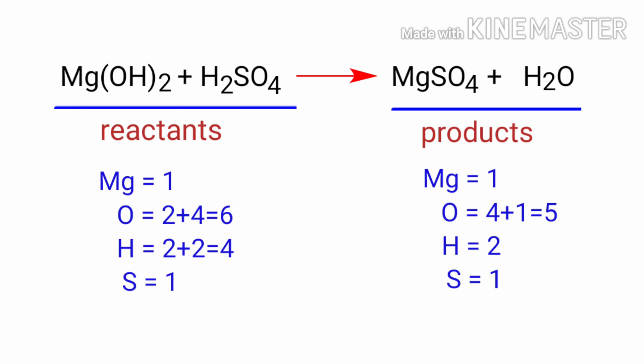The number of atoms are not balanced on both sides. To balance the chemical equation we need to make use of coefficients. A coefficient is a number that we place in front of a chemical formula. In this equation we need to balance the oxygen and hydrogen atoms. To do this we need to put a coefficient of 2 in front of H2O.